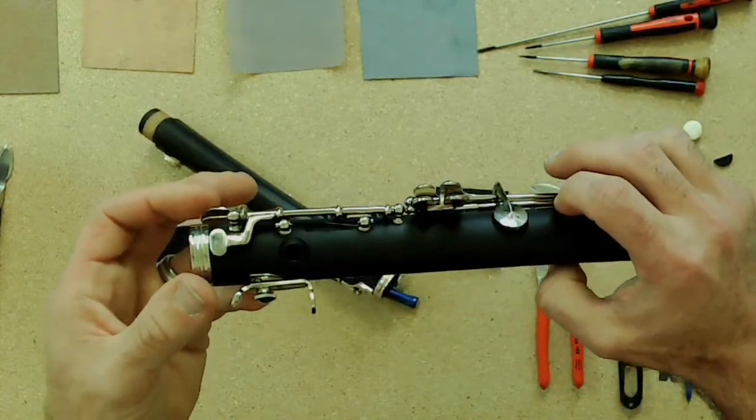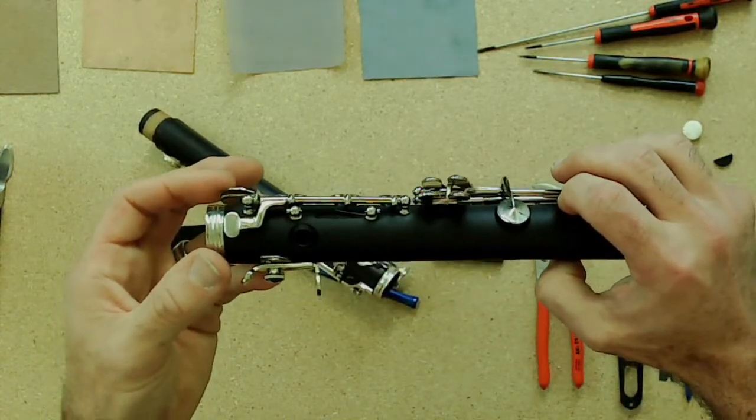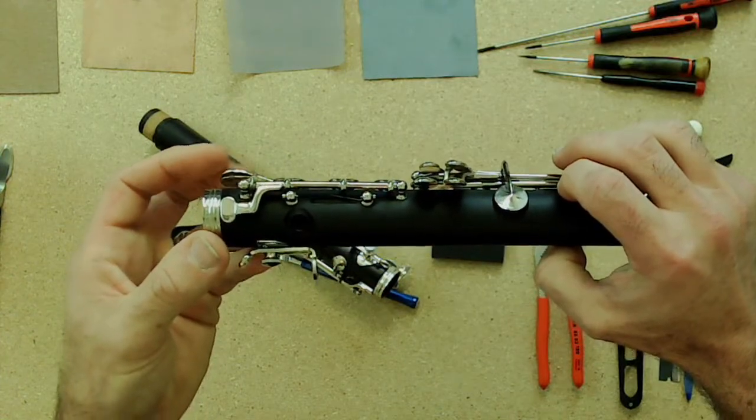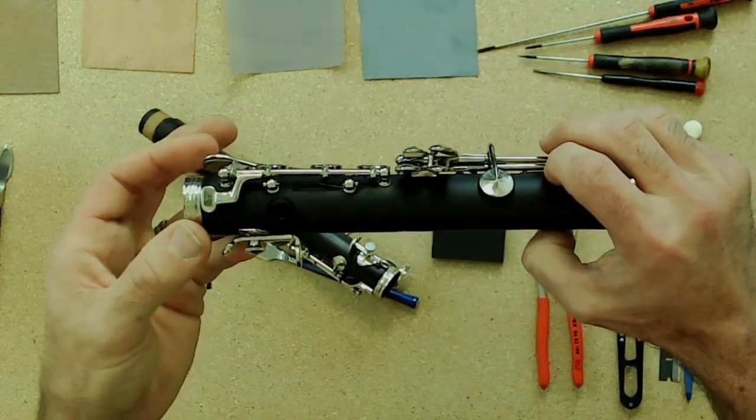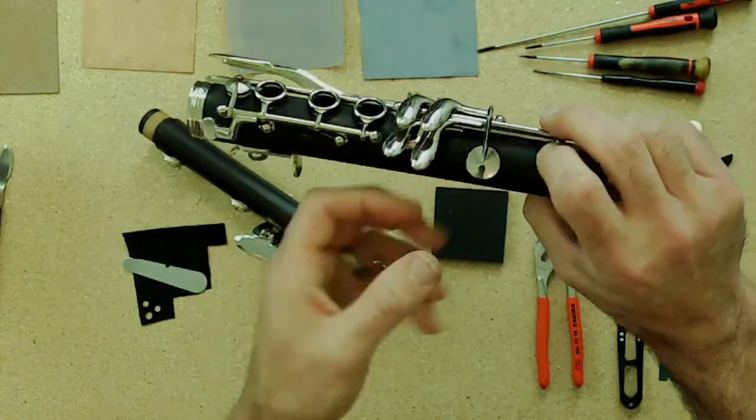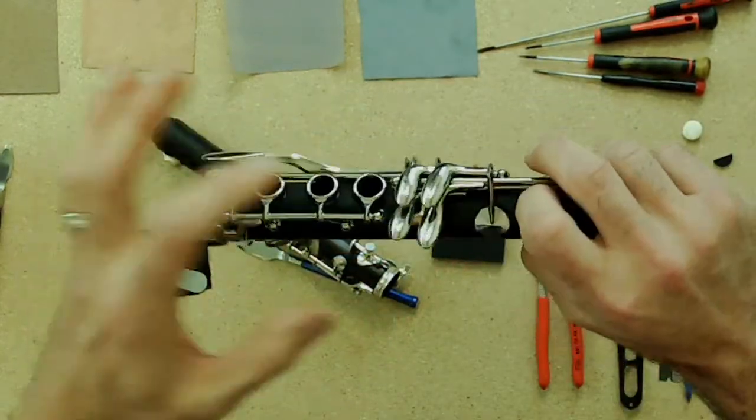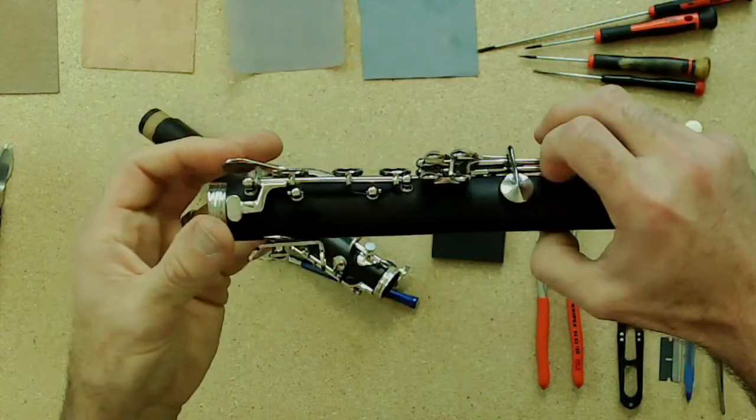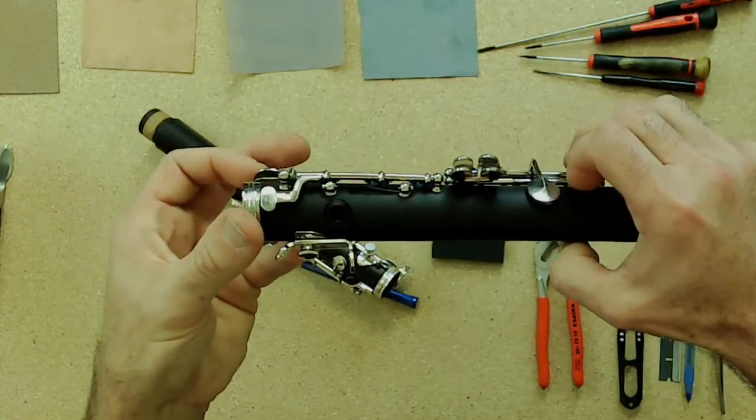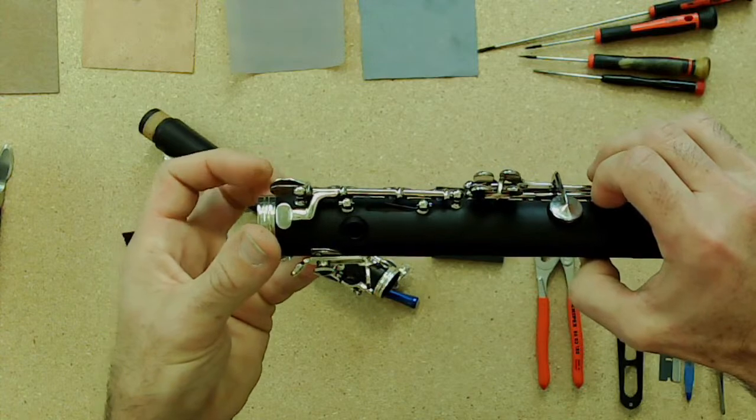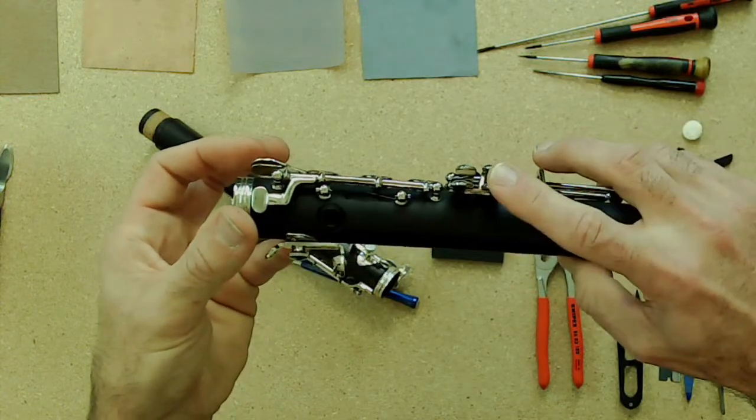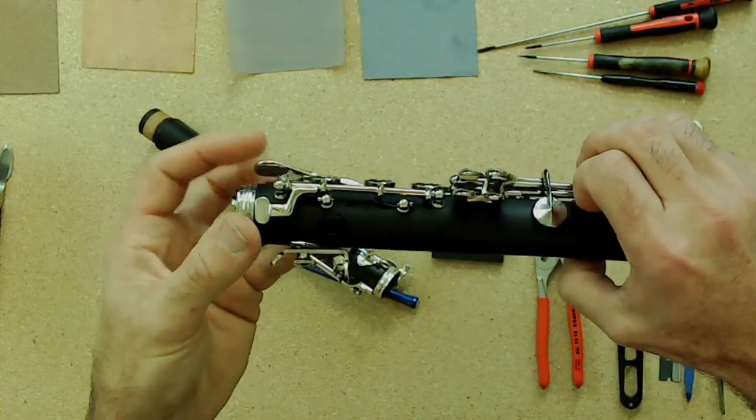So we're going to look real close and see how close we are. And it looks pretty good. So by holding and anchoring this key down and pushing down on the arm on the back, you straighten the key to where it should be. And then now there's no lost motion between the crow's foot and the B E, and this one is still in place as well.